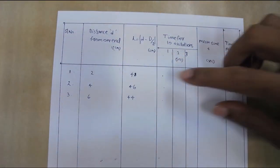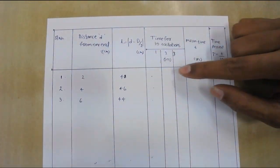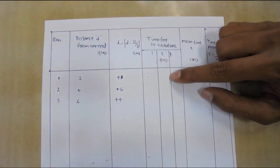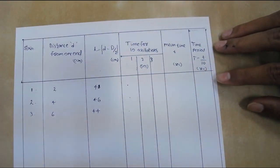In the first table, note down the length of the pendulum, then three measurements of time taken for 10 oscillations, and then divide it by 10 to get the time period.